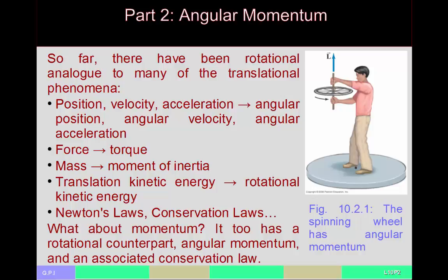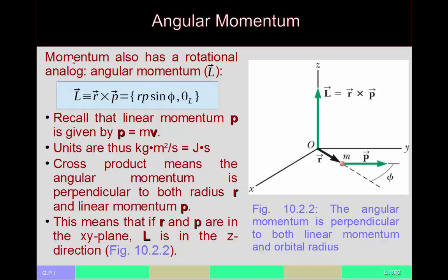Angular momentum is conserved just like linear momentum was conserved. The definition for angular momentum is that it is a vector — we use the letter L to represent it. Lowercase p is linear momentum; L is angular momentum. The definition is that angular momentum is the cross product between vector R and vector P — the vector pointing from the center of rotational motion to the mass, crossed with the momentum vector of that mass.